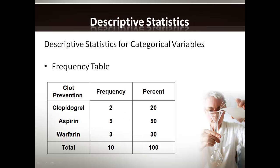Moving on to descriptive statistics — these are used to describe our data, and depending on the type of variable, there are different ways to describe it. For categorical variables, the most useful way is a frequency table, which describes the frequency and percentage of each data point. Here is a frequency table from a study looking at types of anti-clotting medication that 10 patients are on. We have a total frequency of 10 — our sample size — and the drugs they're on. For example, two patients are on clopidogrel, which makes 20% of the total sample size.